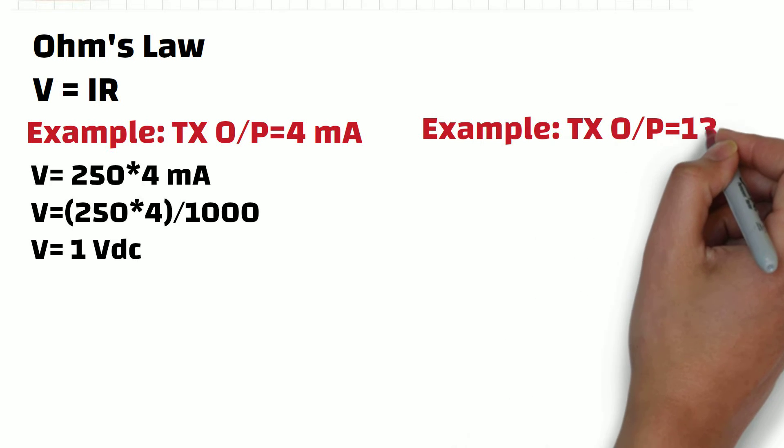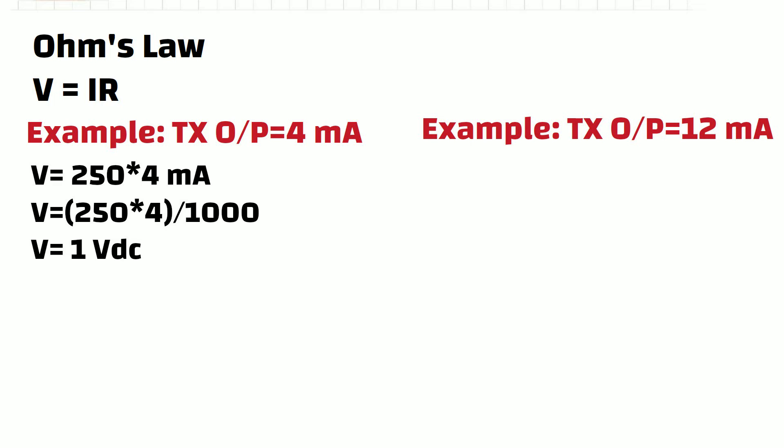Now, let's assume that transmitter's output is 12 mA. And if we put all these values into equation, we will get 3 volt DC as a result.